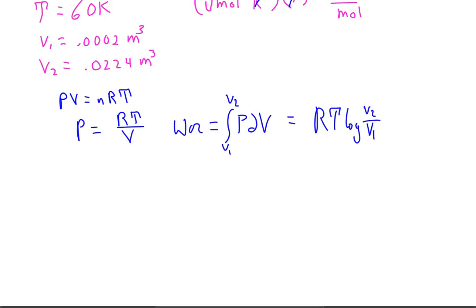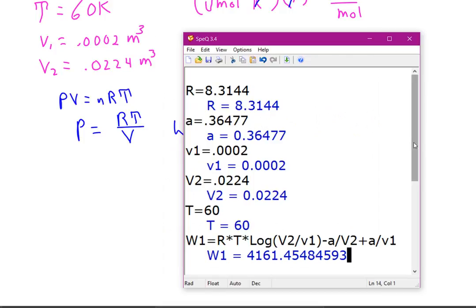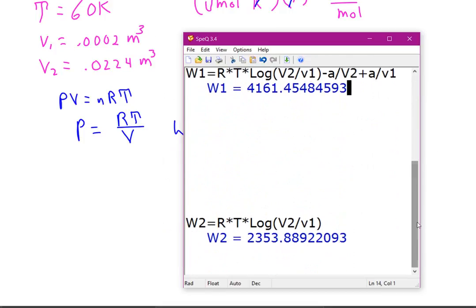So, now we can just bring up the calculator again. And I've already got this ready so we can space down. And you see that the work defined with the ideal gas law is gas constant times the temperature times the log of V2 over V1.